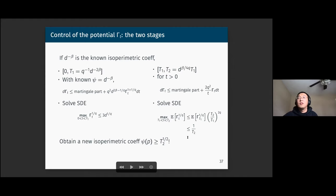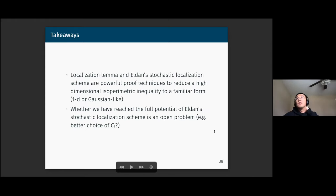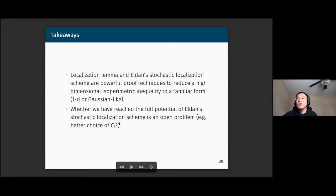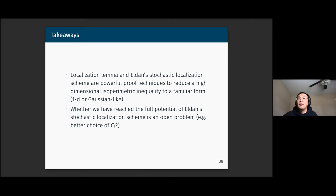To conclude: Eldan's stochastic localization scheme is a very powerful proof technique to reduce a high-dimensional isoperimetric inequality to something more familiar. We have not fully explored the scheme — there are many ways to tune it, such as choosing different control matrices C_t; in this talk we took C_t = identity, but there may be better ways to choose these parameters to get a better bound. Thank you.